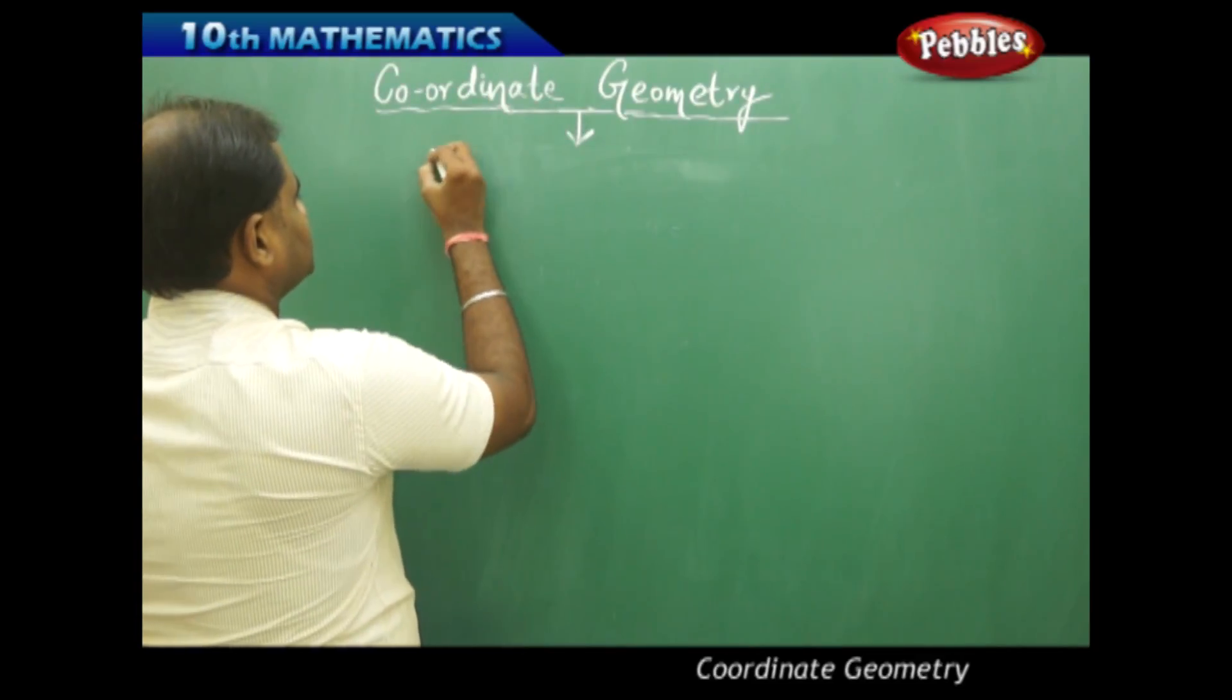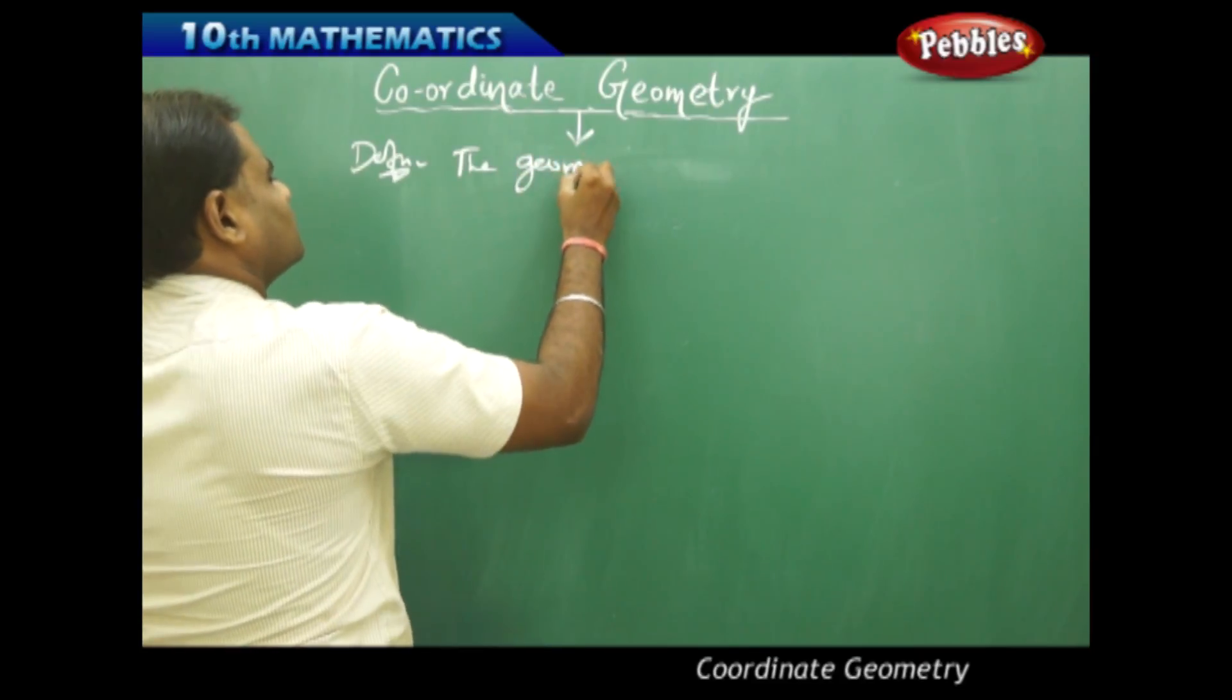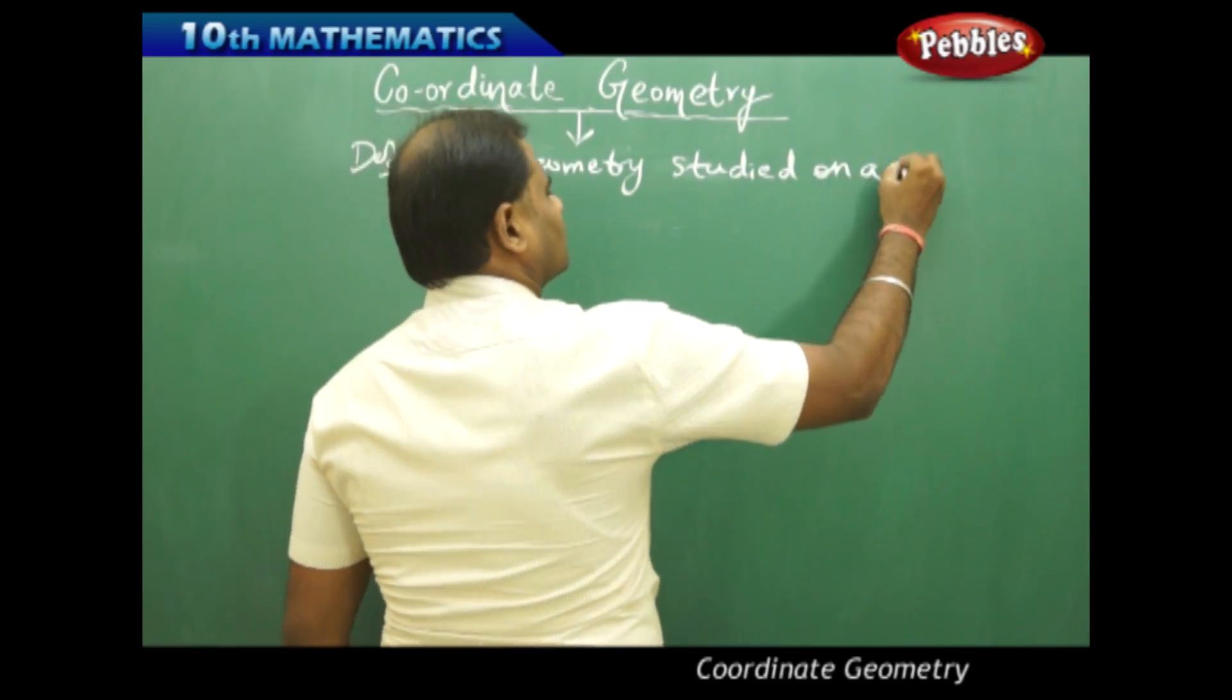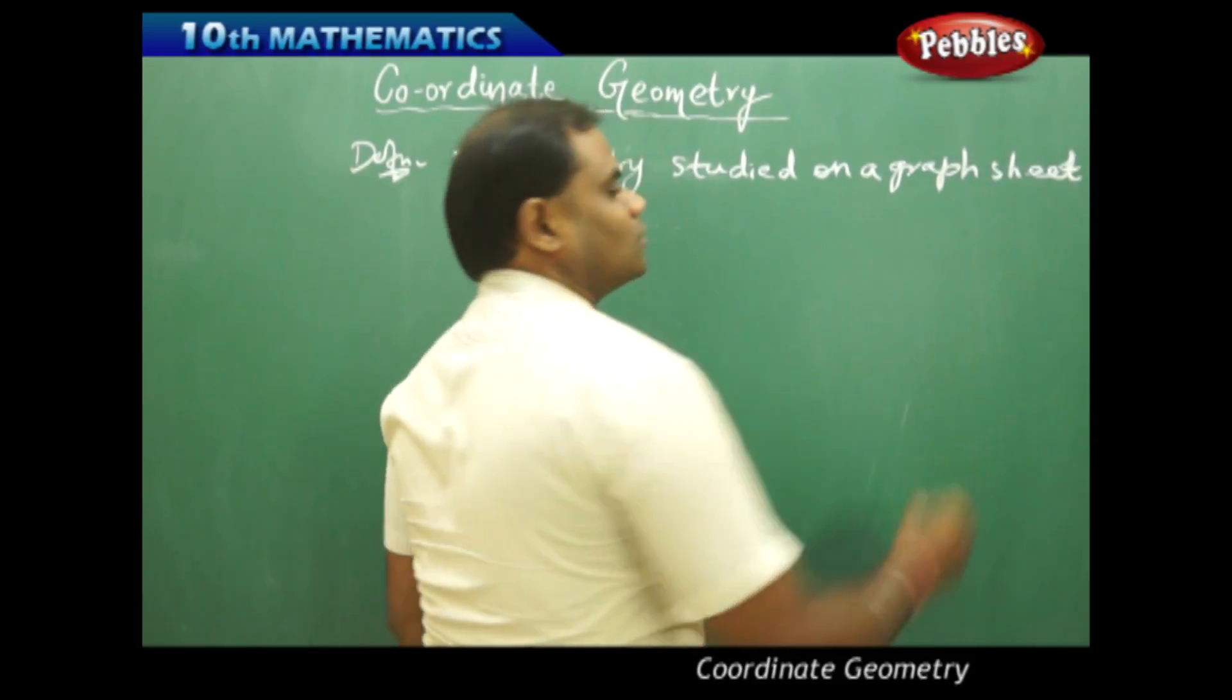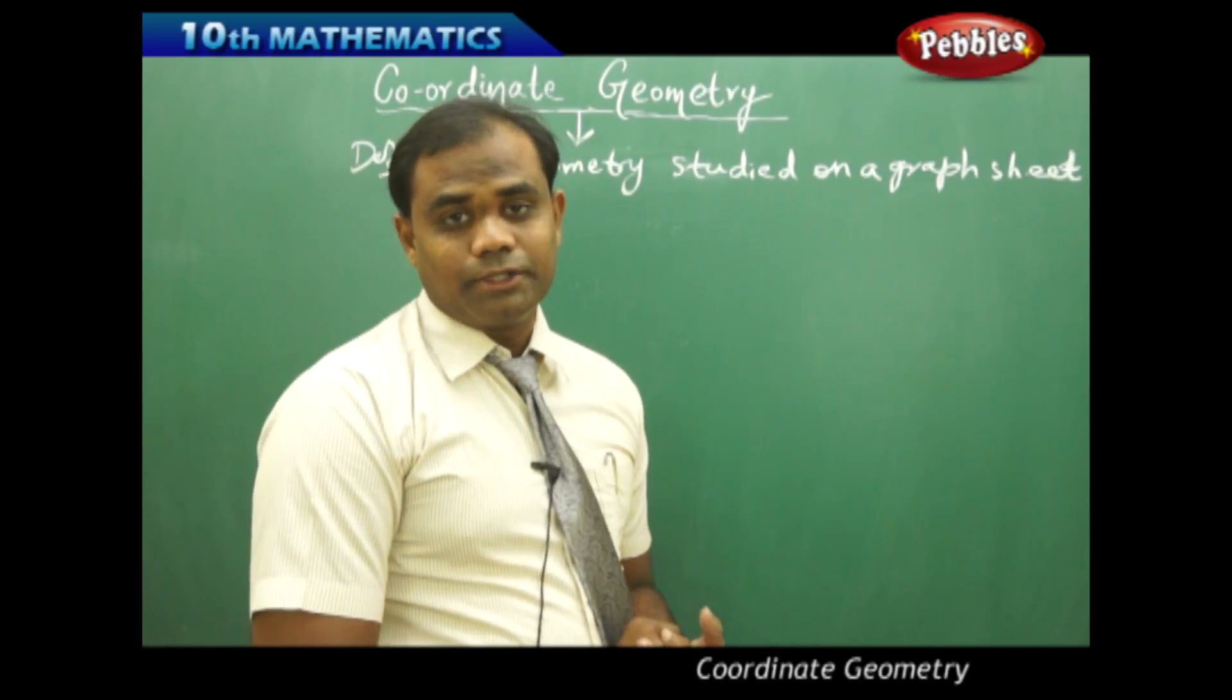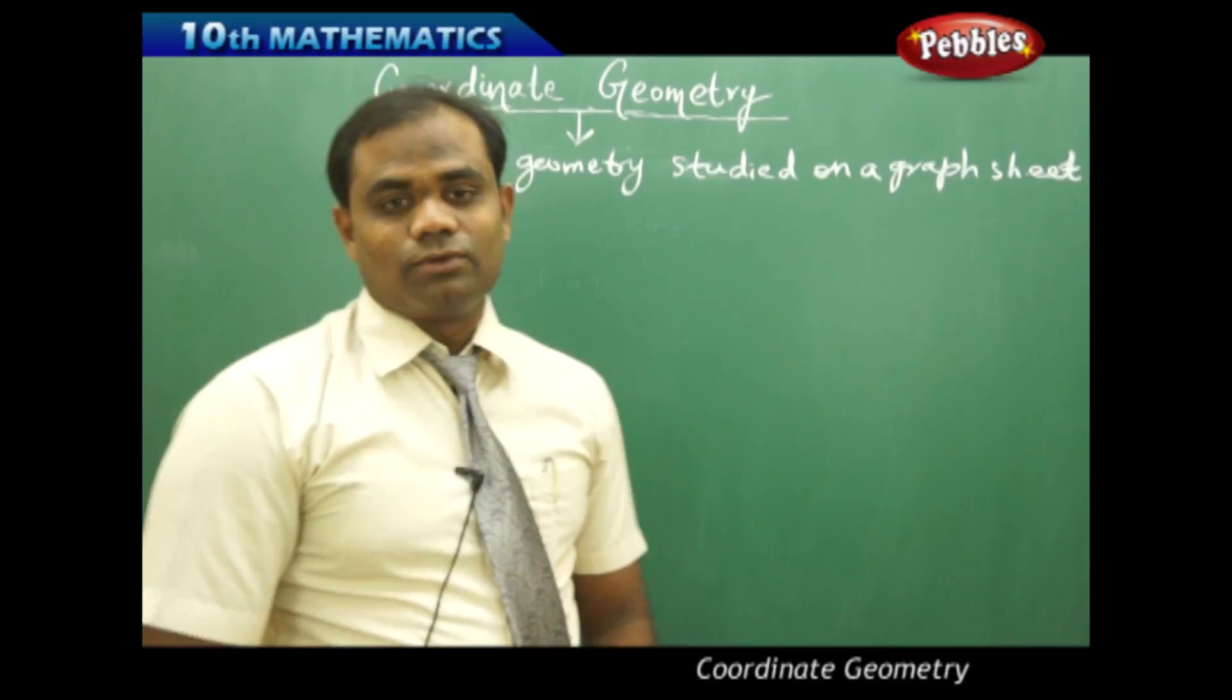The definition is the geometry studied on a graph sheet is called coordinate geometry. Now what are the rules on the graph sheet is very important because coordinate geometry is more associated with the rules of the graph sheet than that of the graph sheet itself. So what are the rules?